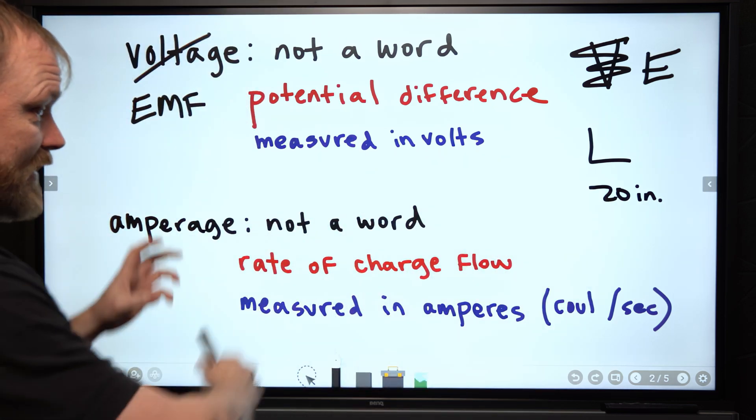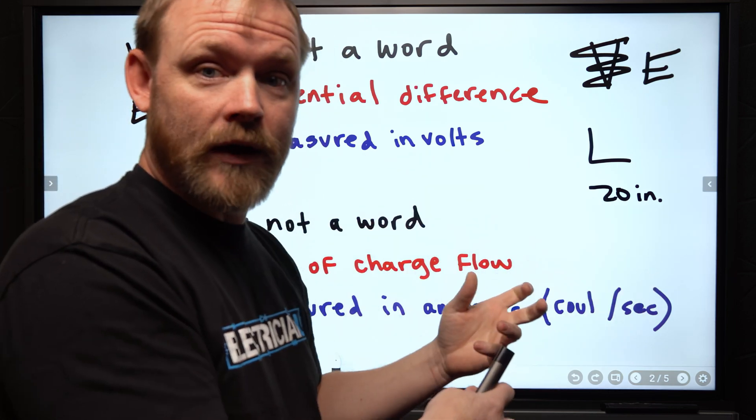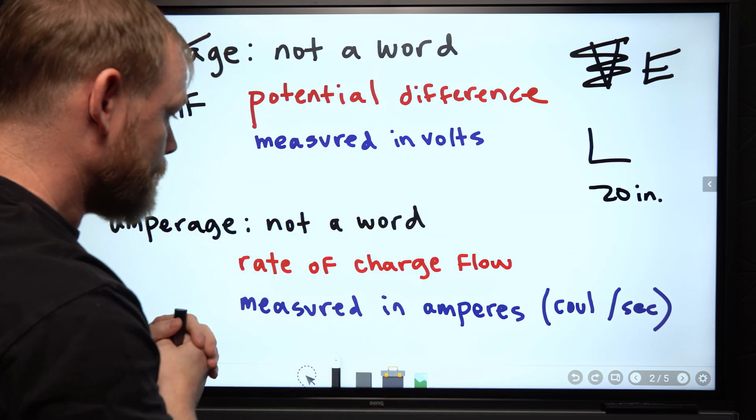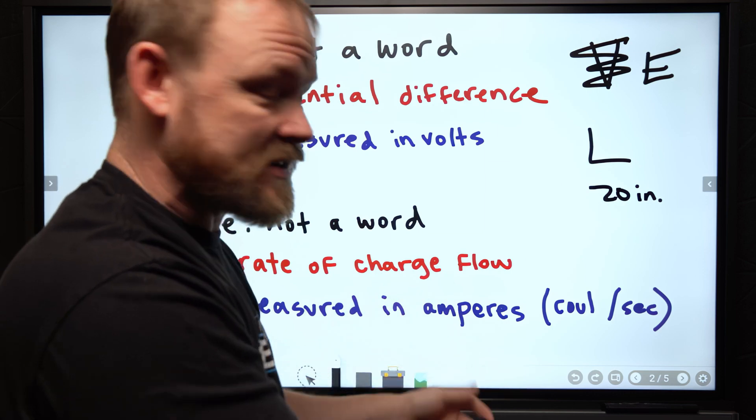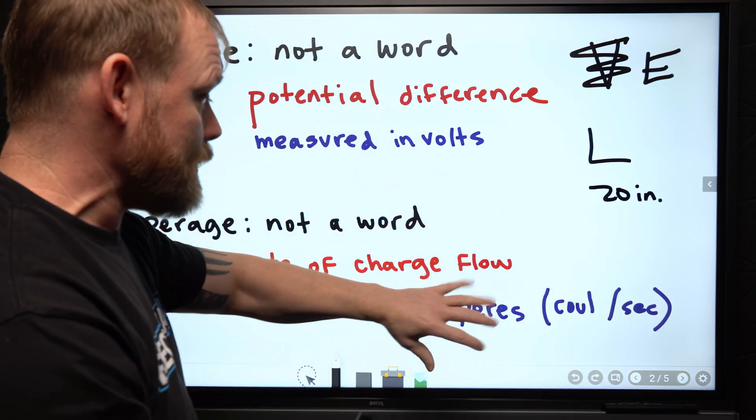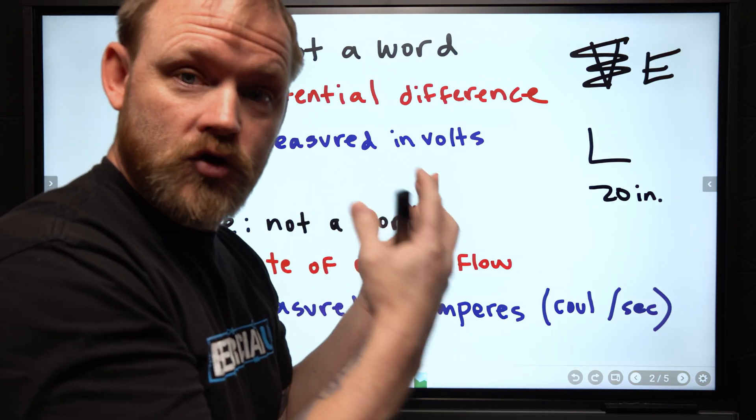amperage is not a word. It's a rate of flow of charges through a conductor that we are measuring. And when we take a measurement of the thing, that intensity of flow, we're measuring that in amps. It's a number of coulombs per second is an ampere. So amperes is the measurement. Flow of charges is what we're trying to measure.